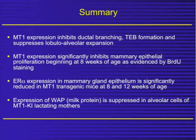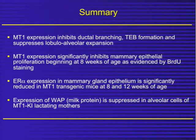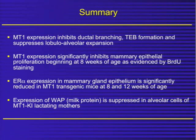To summarize the transgenic mouse findings: MT1 expression inhibits ductal branching, terminal end bud formation, and suppresses lobulo-alveolar expansion. MT1 expression significantly inhibits mammary epithelial proliferation beginning at eight weeks, measured by BrdU staining. Estrogen receptor alpha expression in the mammary gland of the MT1 transgenic mouse is significantly reduced beginning at eight weeks through lactation, and expression of milk proteins such as whey acidic protein in alveolar cells is also significantly decreased. So melatonin has a very profound effect on normal mammary and breast epithelial cells.